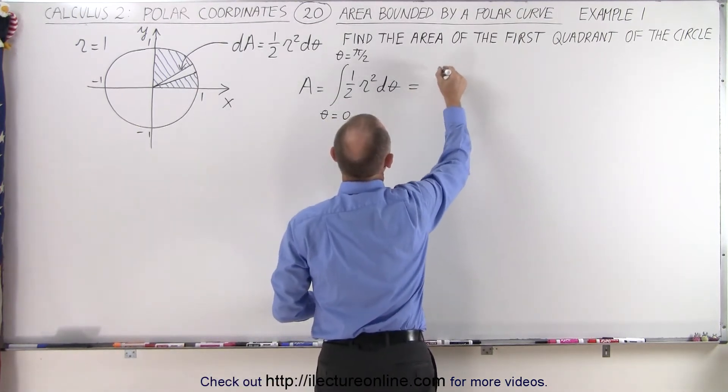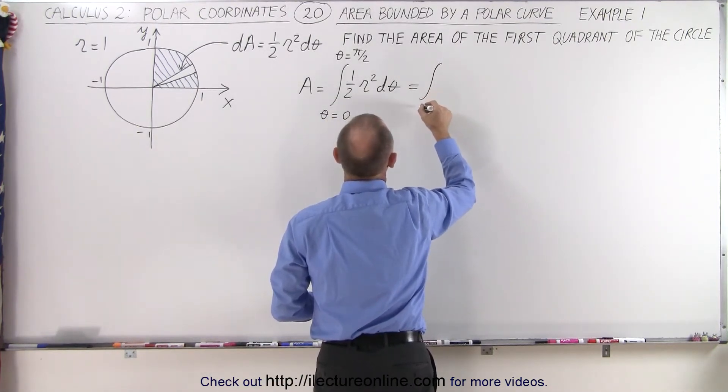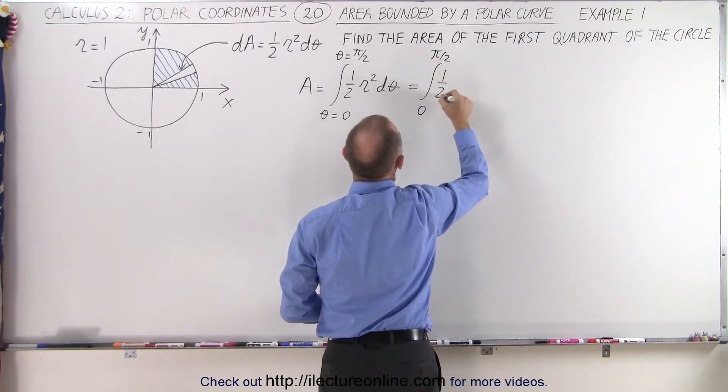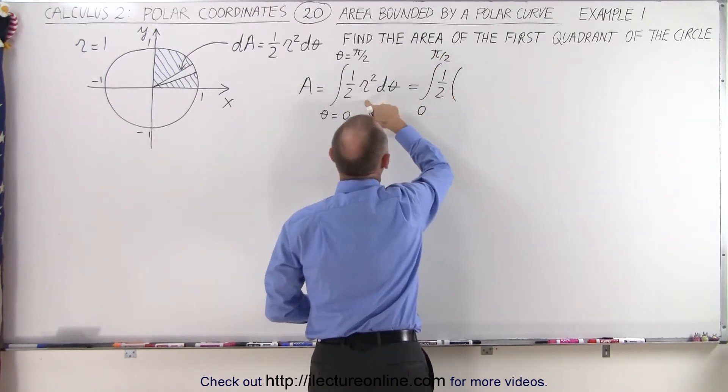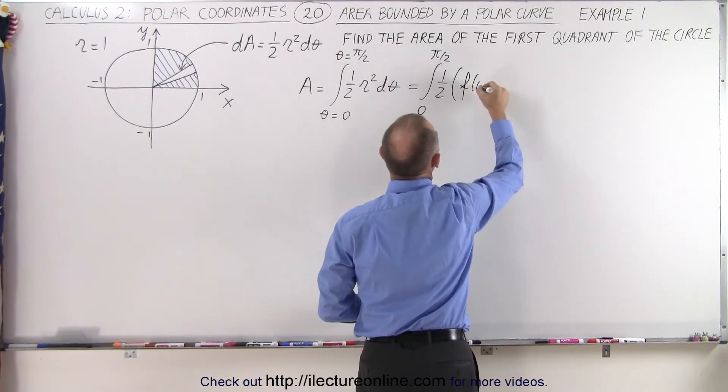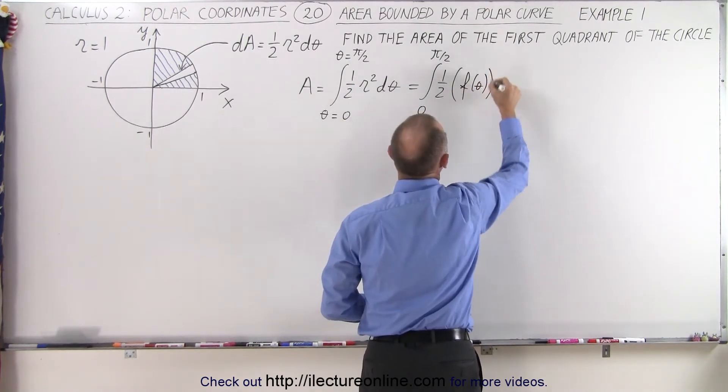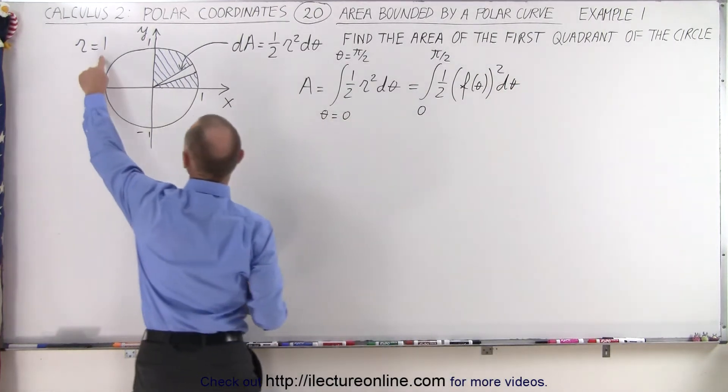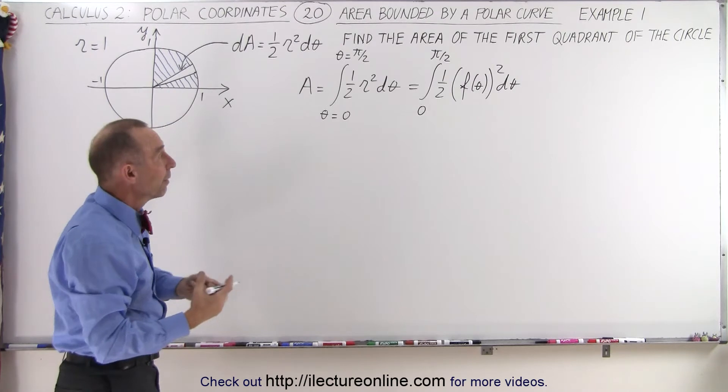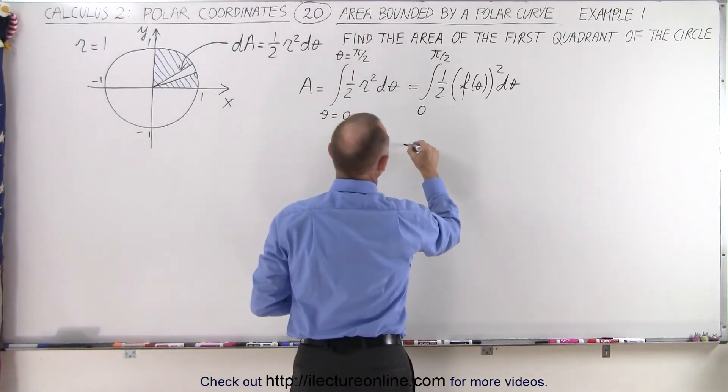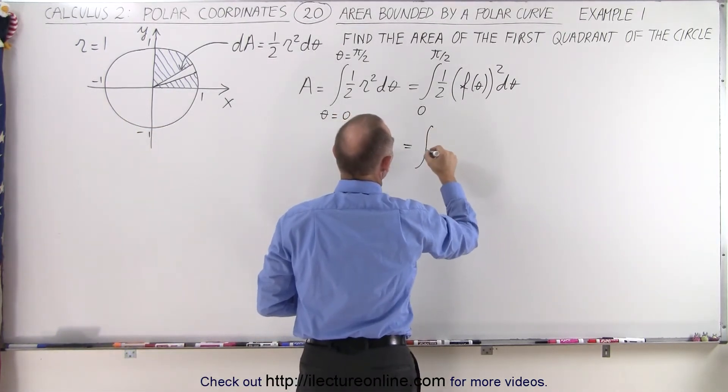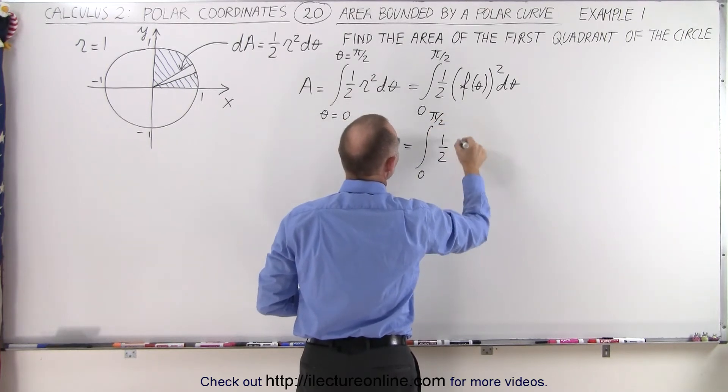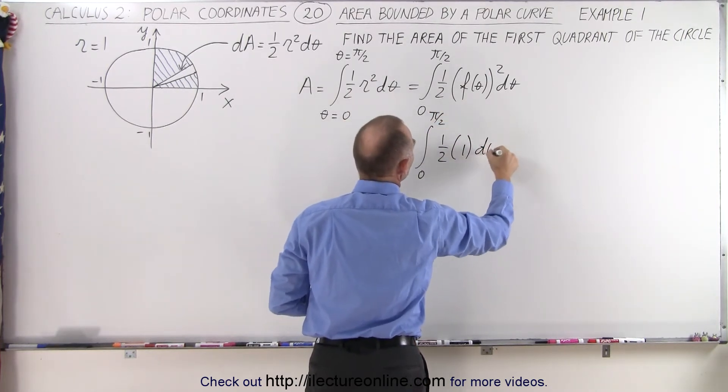So that means this is now going to be equal to the integral from 0 to π/2 of one-half times the function of theta times dθ. In this case, the function is equal to 1, so we can simply replace that function by 1. This is going to be the integral from 0 to π/2 of one-half times 1 times dθ.